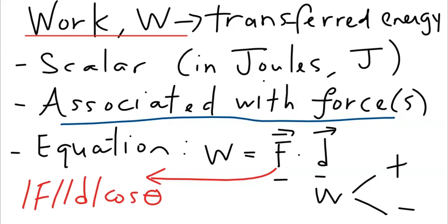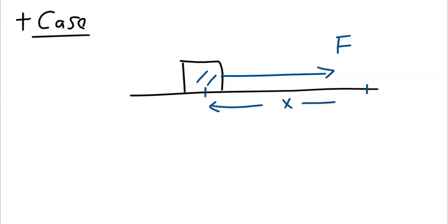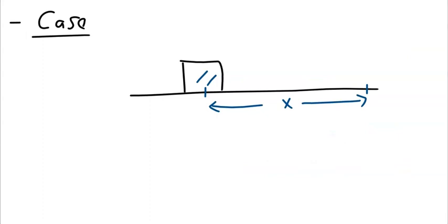The case where work is positive: if an object is pulled to the right by force F and gets displaced by distance x in the same direction, the angle between force and displacement is 0°. Since cos 0° = 1, the work W = F × x, which is a positive quantity.